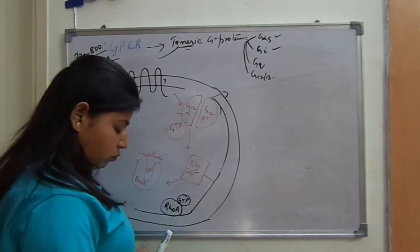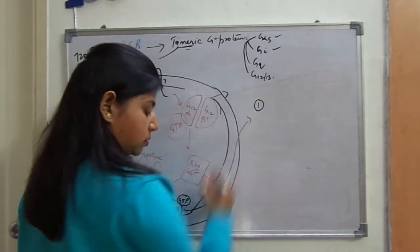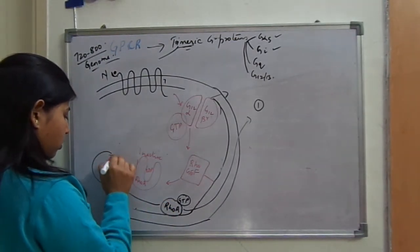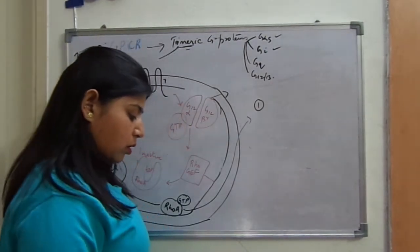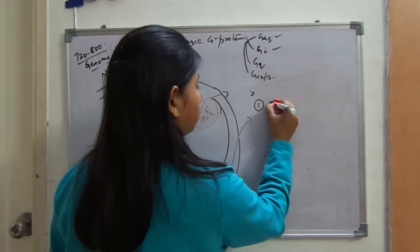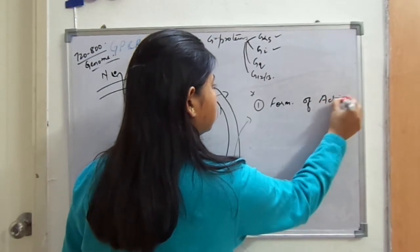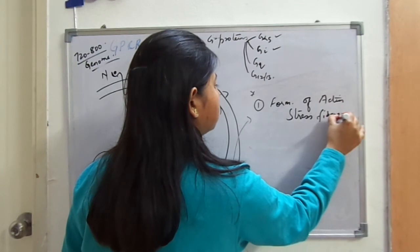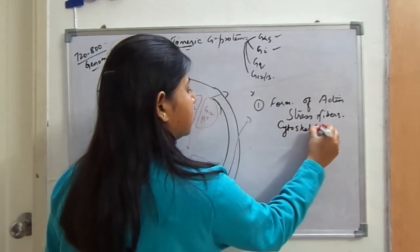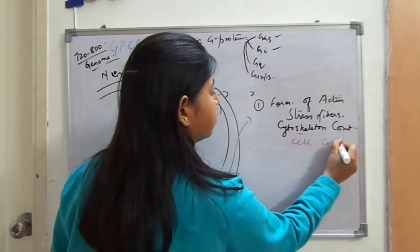Rho-A protein is very important for maintenance of active cytoskeleton inside our body. It activates a protein known as ROC, which is responsible for formation of active stress fibers. When active stress fibers are formed inside the cell, cytoskeletal contraction occurs, and then cell contraction also occurs.